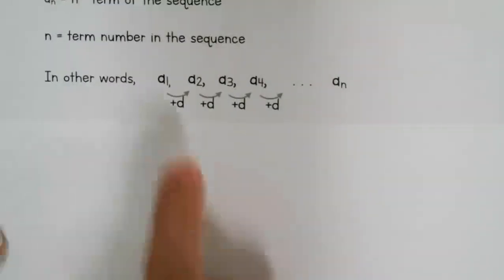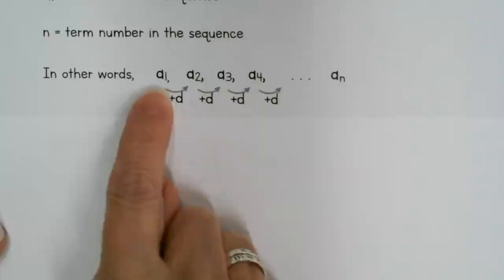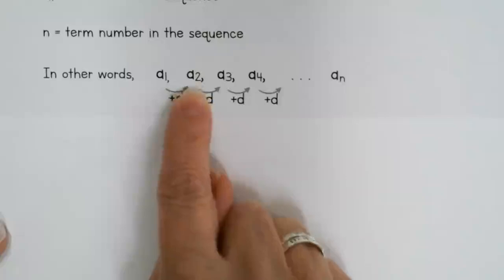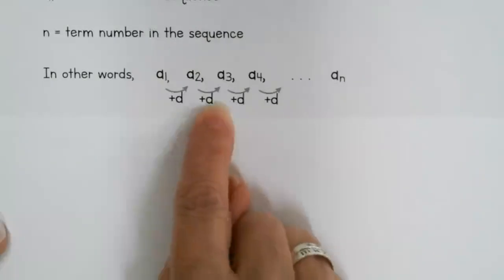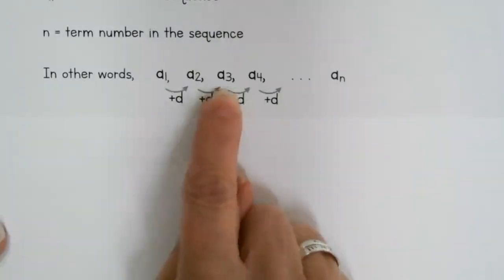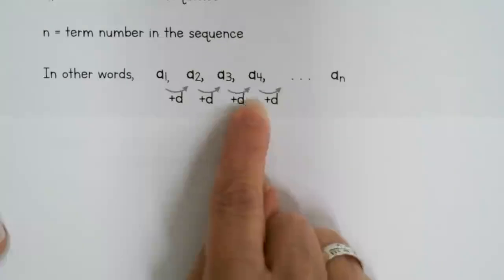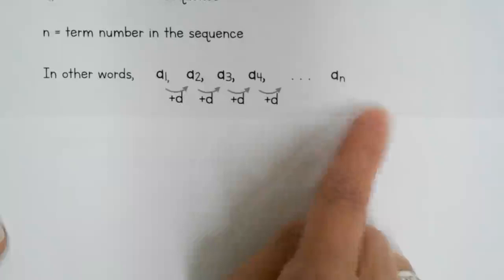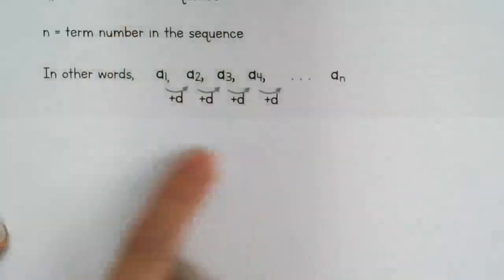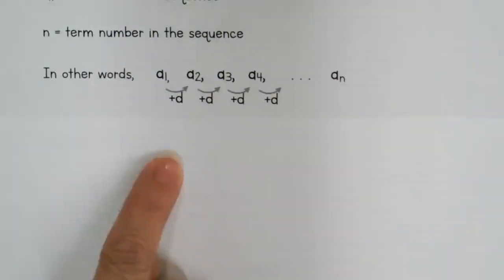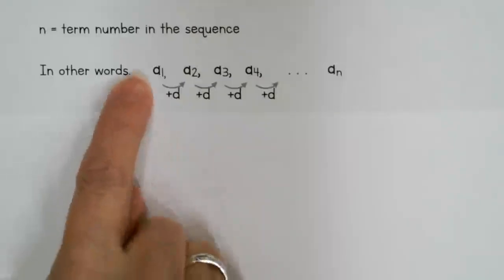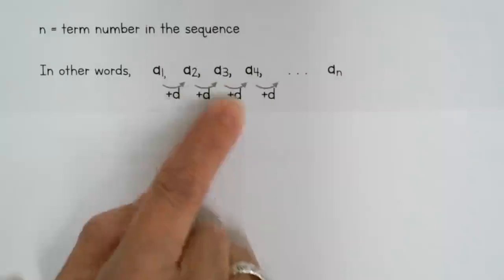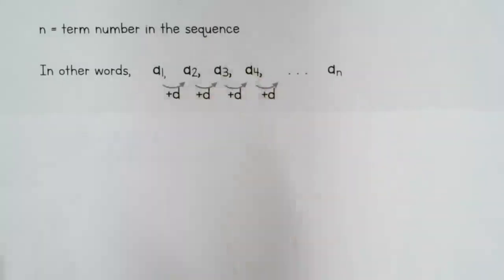To put variables with this: we have our first term, we add the common difference d, and that gives us the second term. Then we add the common difference again to get the third term, add d again to get the fourth term, and just continue on and on. So in variables, the sequence looks like: first term, add d to get the second term, add d again to get the third, add d again to get the fourth, and so on.